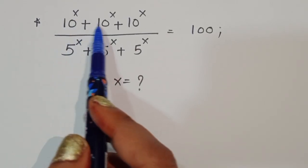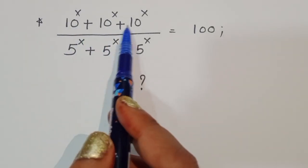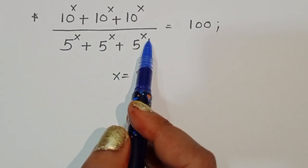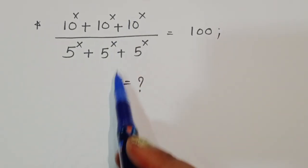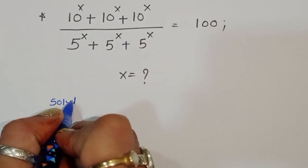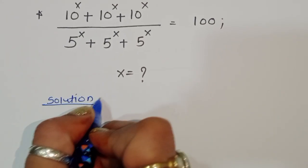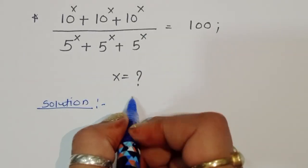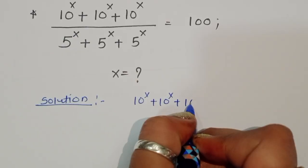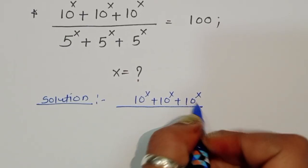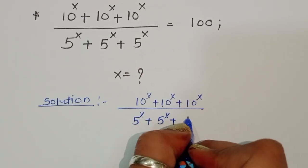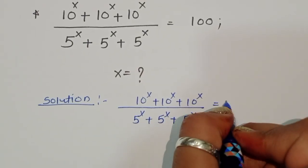The question is: given (10^x + 10^x + 10^x) divided by (5^x + 5^x + 5^x) is equal to 100, we have to find out the value of x. Let's see the solution.